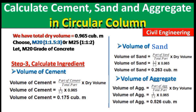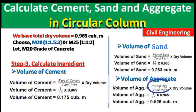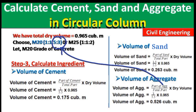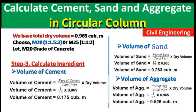For aggregate: part of aggregate = 3, total parts = 5.5, dry volume = 0.965. Volume of aggregate = (3 / 5.5) × 0.965 = 0.526 cubic meters.